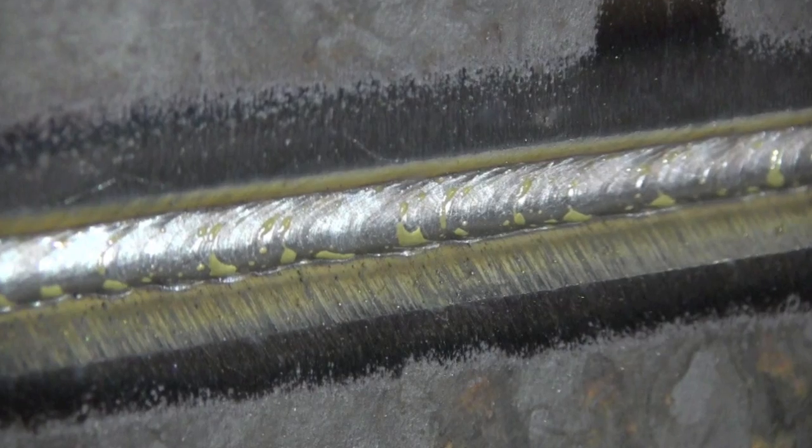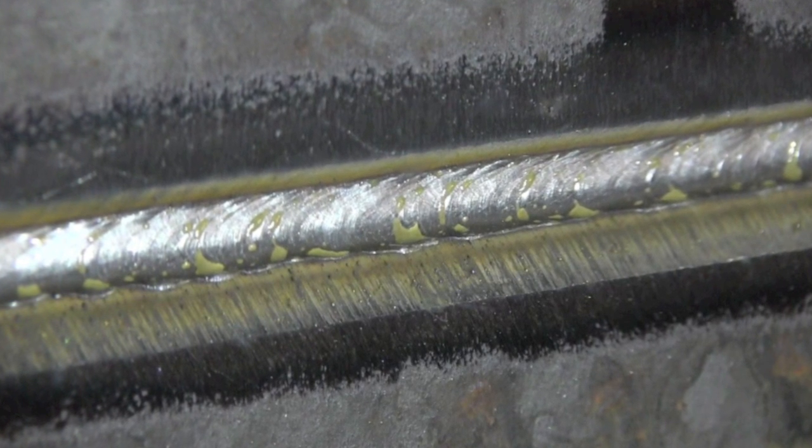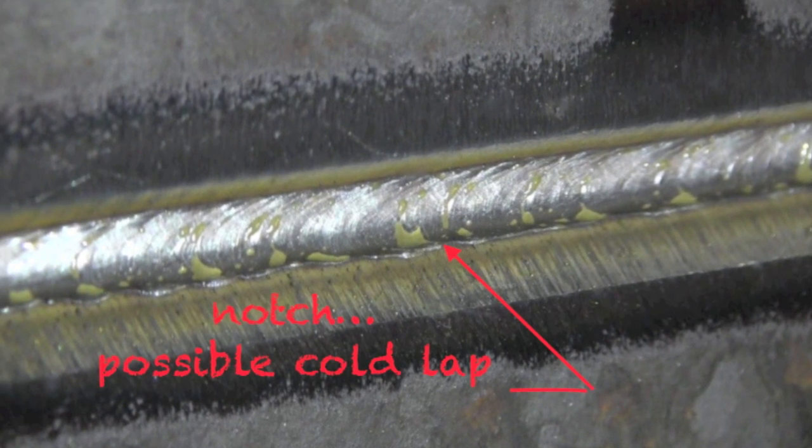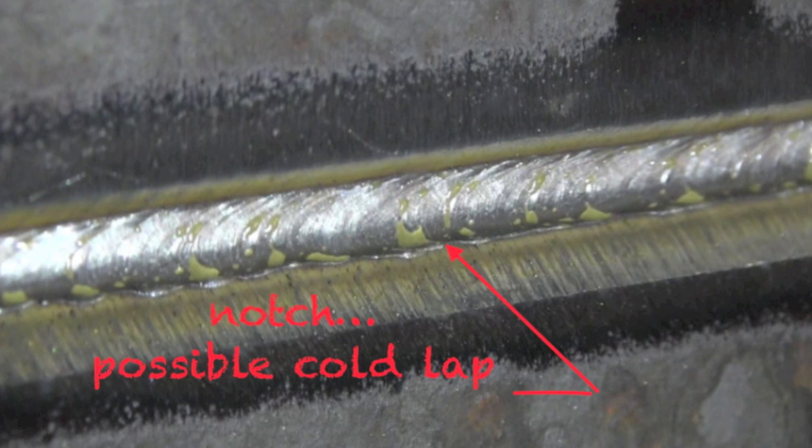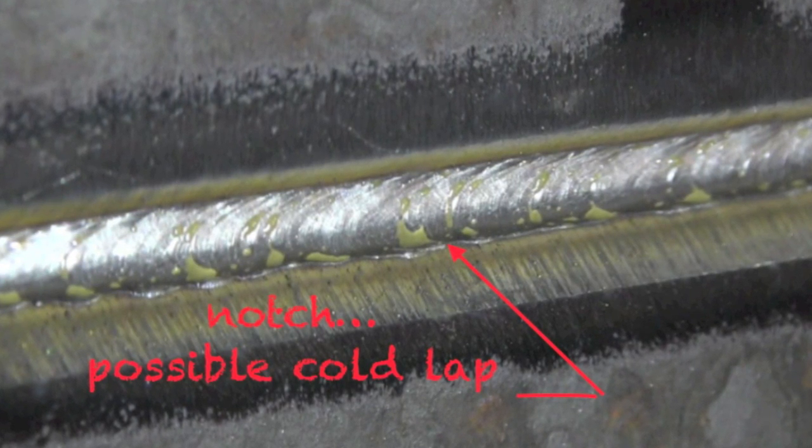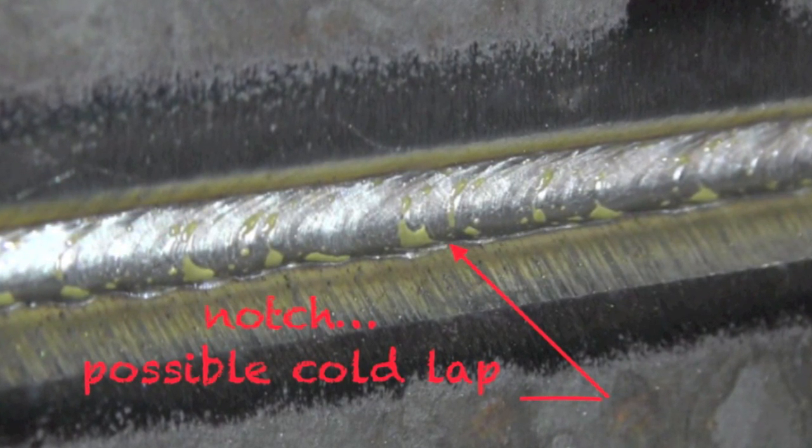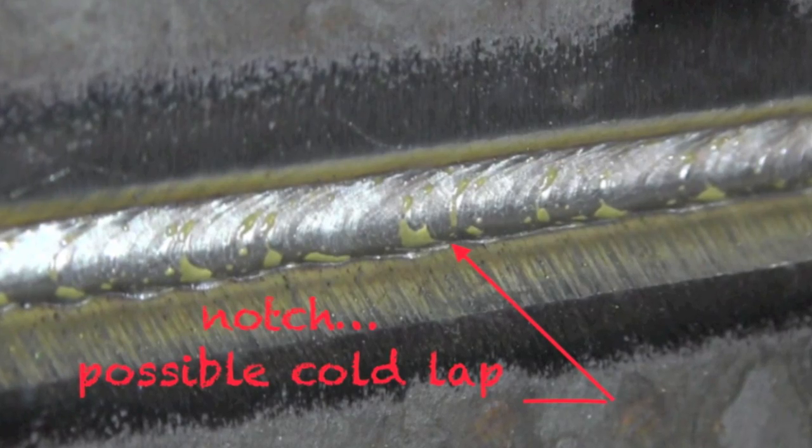Now on the bottom of this root pass, right there, we got a little notch. It's kind of convex and the way to fix that is take a grinder and kind of shave that down a little bit before making this pass.